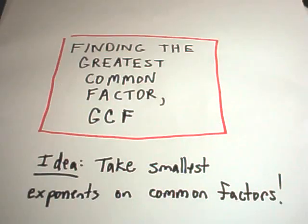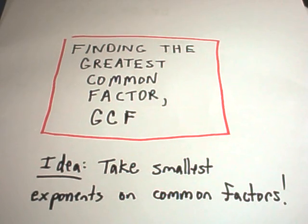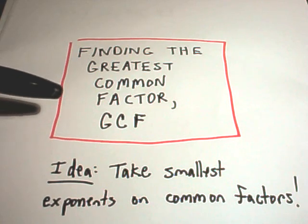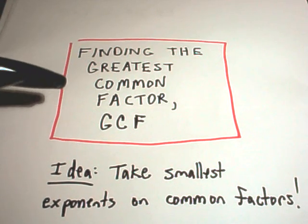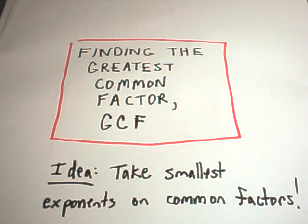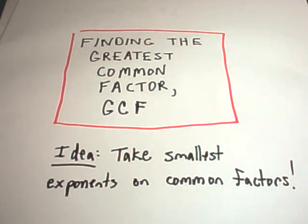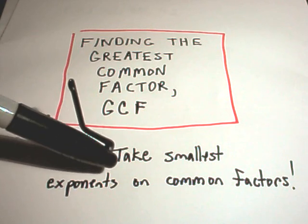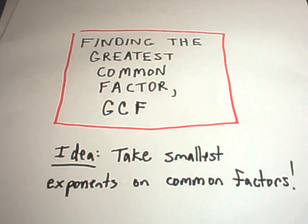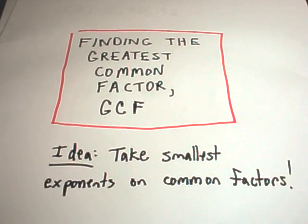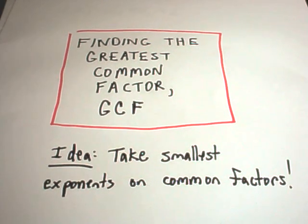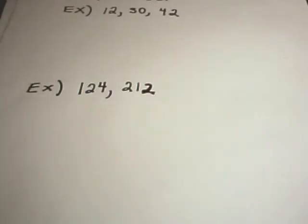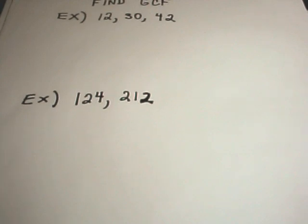In this video I'm going to talk about finding the greatest common factor, or as it's usually abbreviated, the GCF. The basic idea you need to remember is you're basically pulling out the smallest exponents on any common factor, along with that factor as well. If you've looked at the least common multiple video I've made, it's a very similar idea, just a little different.